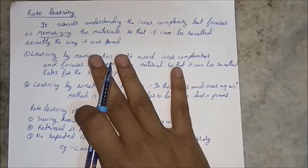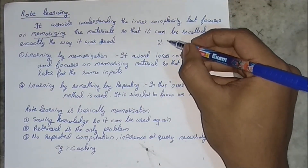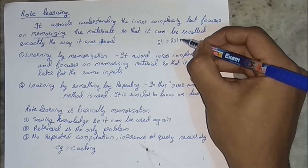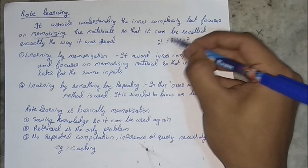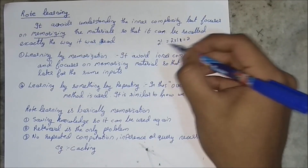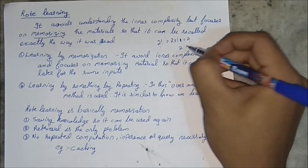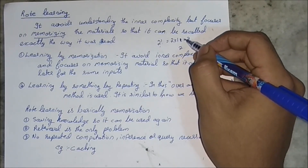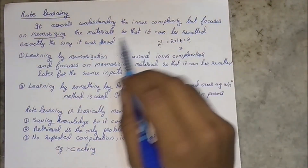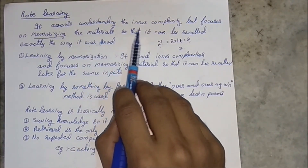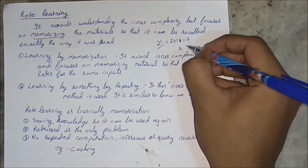Basically this method is memorizing and by-hearting — it doesn't compute the value repeatedly. It computes just once and then by-hearts the value. For example, take two factorial: two into one equals two. Now if you ask for two factorial again, it will have a database which has already stored that two factorial is two, so it will not do any arithmetic logic operation over that. That is rote learning — memorizing the material so that it can be recalled exactly the way it was read.